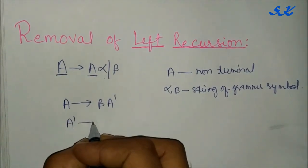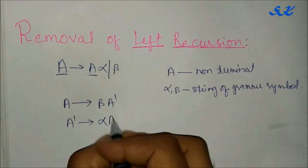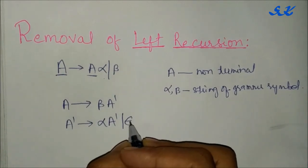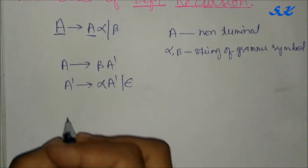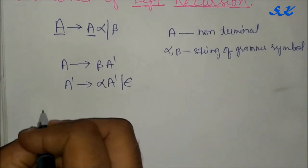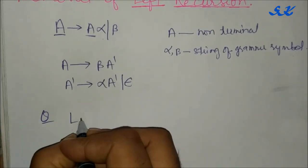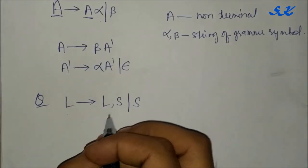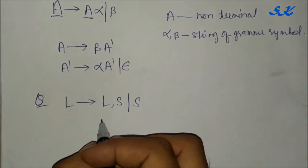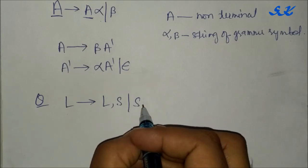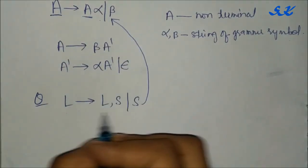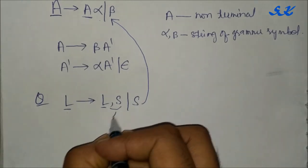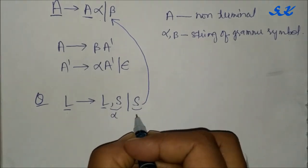Consider this question: L to L comma S | S. This production is left recursive because it satisfies the general production L to L alpha, where alpha is comma S and beta is S.